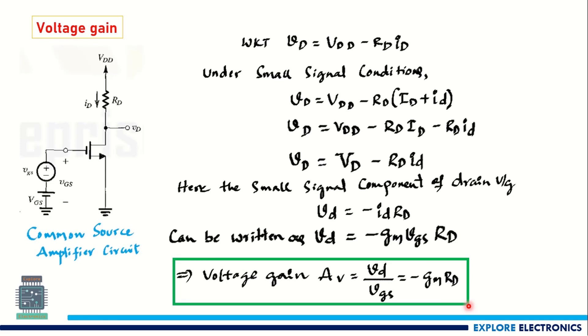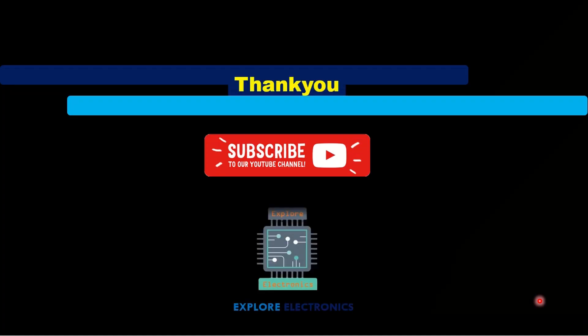So we have covered transconductance, voltage gain, and the DC operating point. In the next video, we will look at the small signal model of the MOSFET. Thank you.